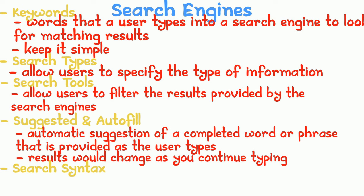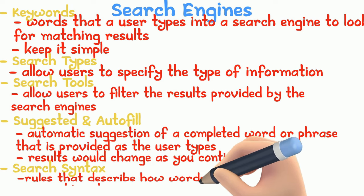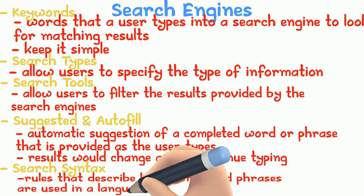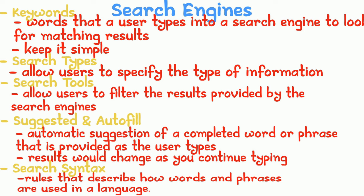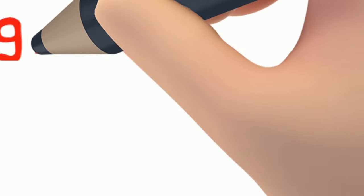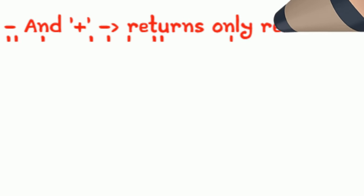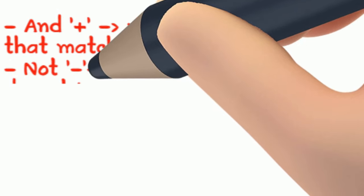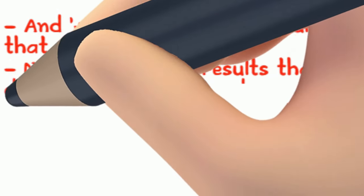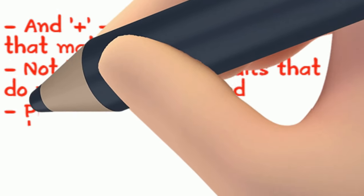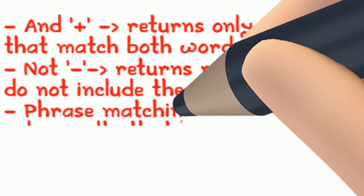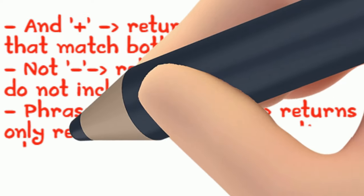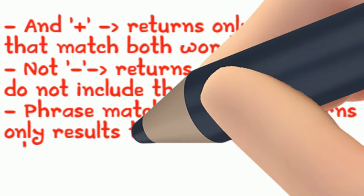Search syntax are rules describing how words and phrases are used in a language. When entering a search, 'AND' returns only results matching both words, 'NOT' returns results that do not include a word or phrase, and phrase matching (using quotes) returns only results containing the exact entire phrase.